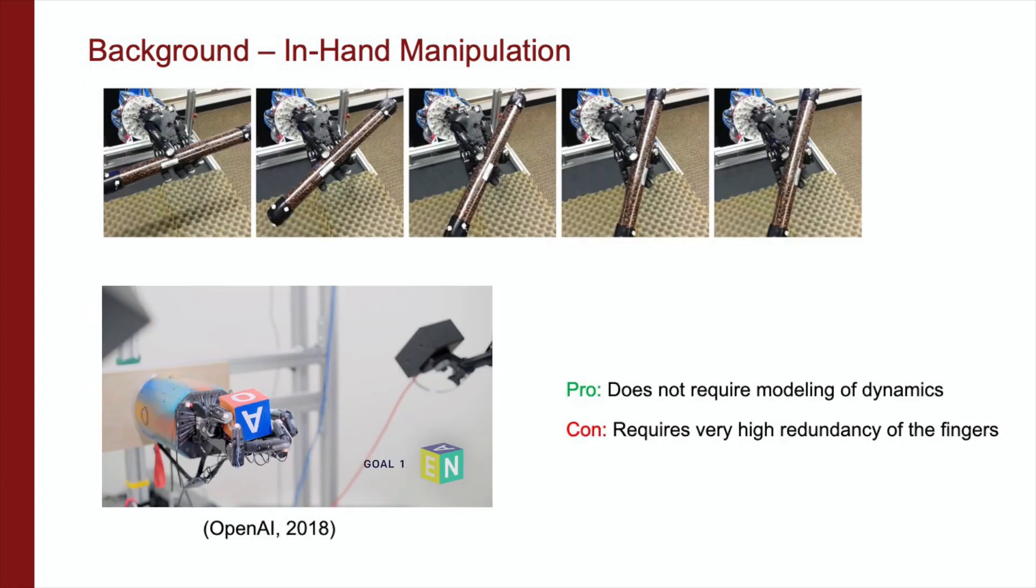Contrary to modeling the complex dynamics involved in grasping and in-hand manipulation, some researchers use reinforcement learning to search for optimal policies. Deep reinforcement learning has been implemented successfully on the 24-DOF shadow hand for dynamically moving a cylinder in-hand and for arbitrarily reorienting a cube using visual information. However, both examples require very high redundancy of the fingers to maintain stable grasps.